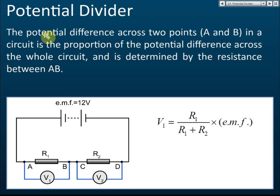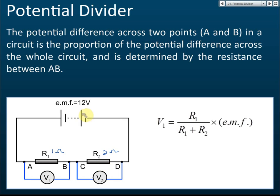Now, what does potential divider mean? Let's say we have a series circuit with an EMF of 12 volts. If R1 is 1 ohm and R2 is 2 ohms, these two resistors in series will share the 12 volts. They share according to their resistance — higher resistance gets higher voltage. So 12 volts is shared by a total of 3 ohms (1 ohm plus 2 ohms), giving 4 volts per ohm.